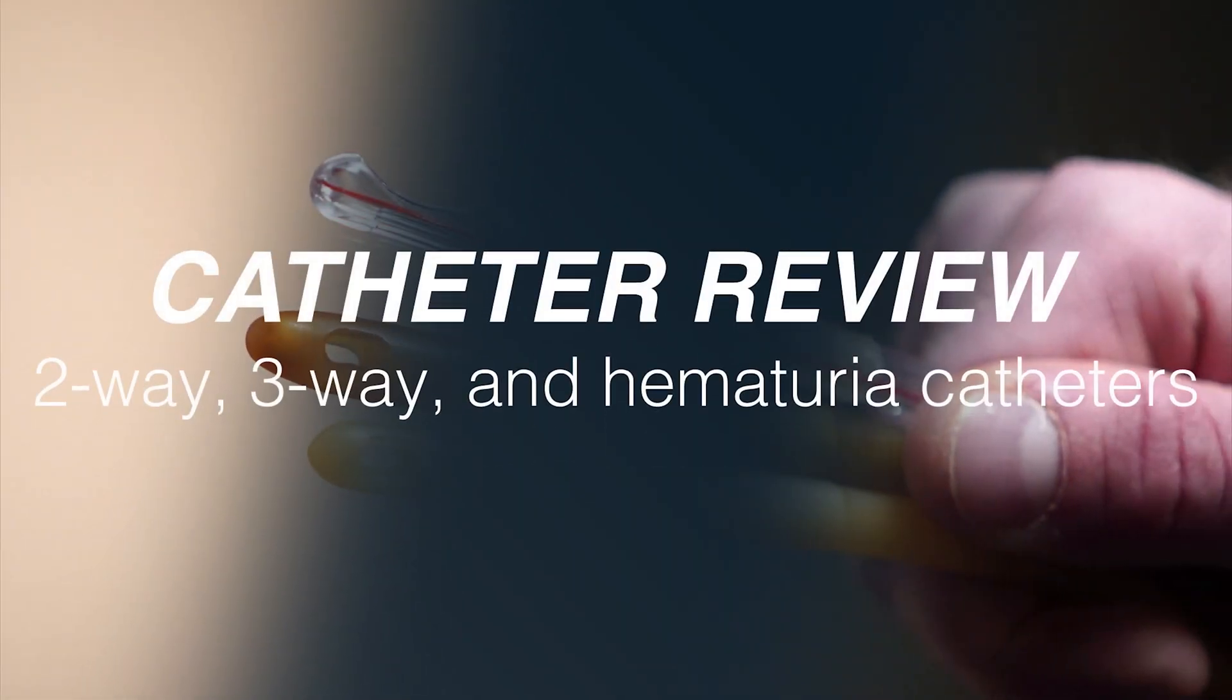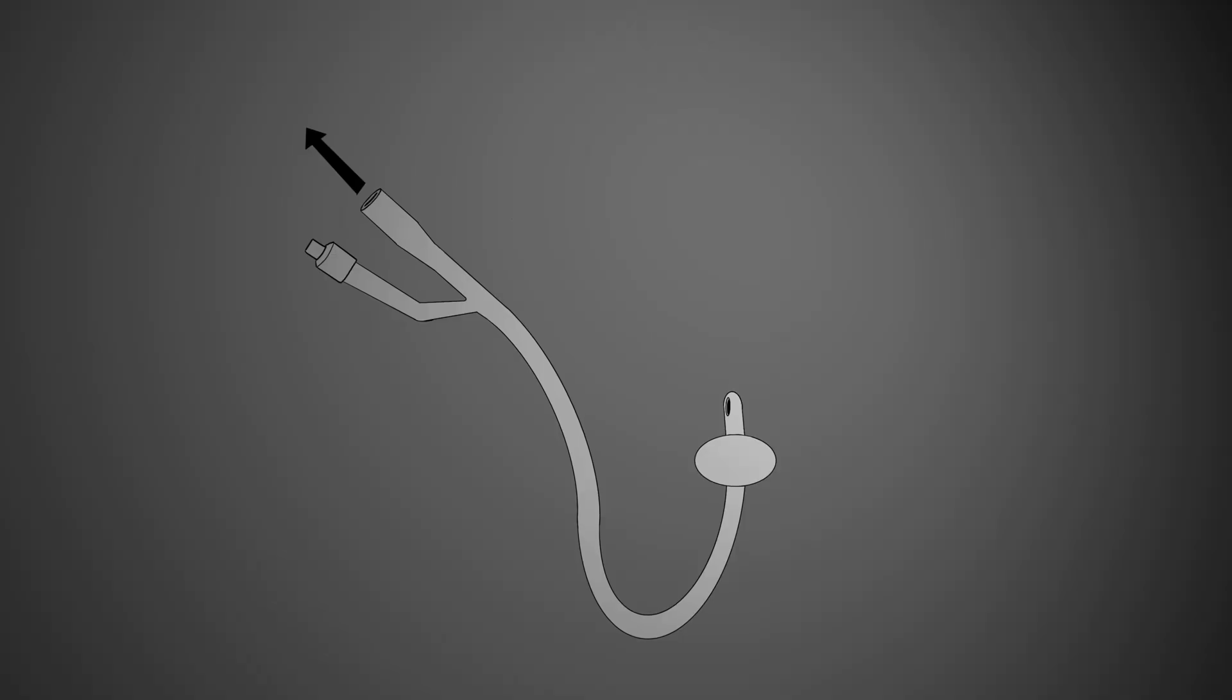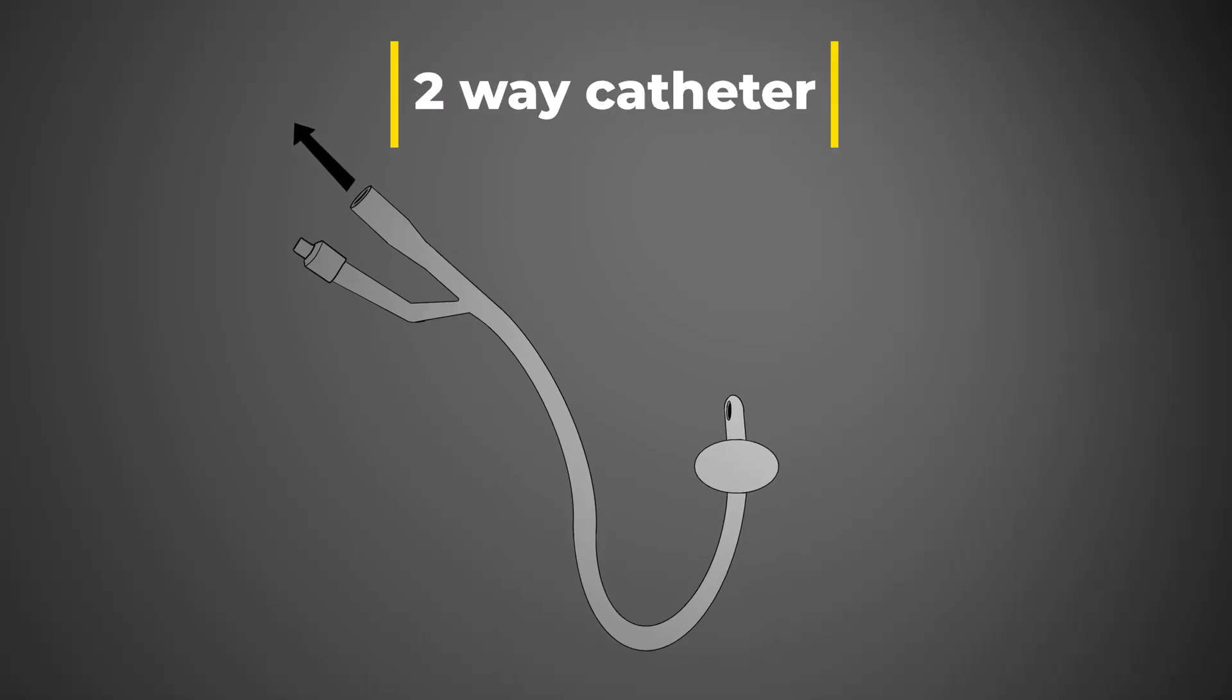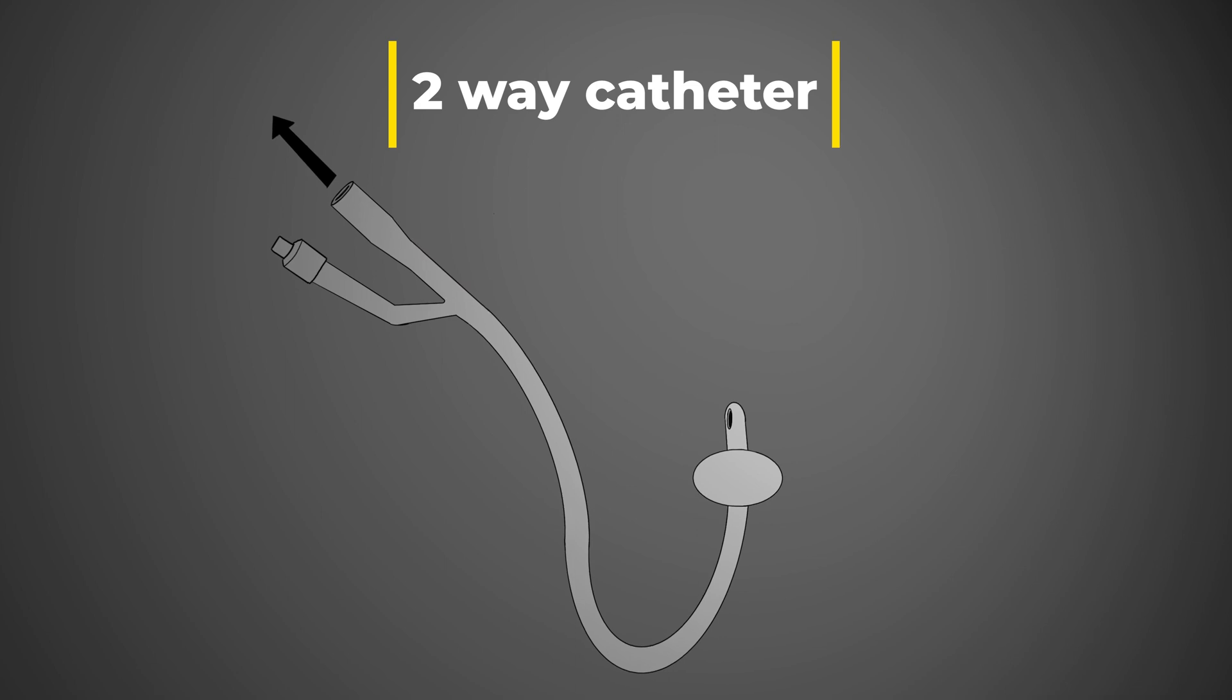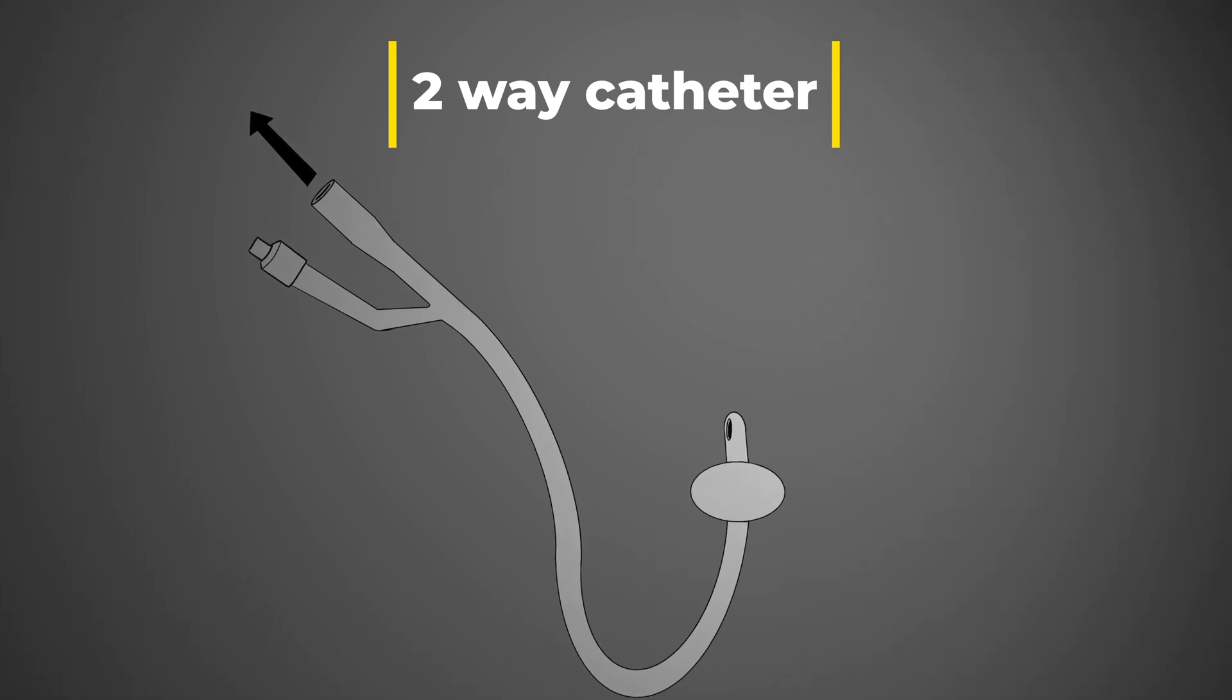So, catheter review. Let's go over what is a two-way Foley catheter and a three-way Foley catheter, and what is a hematuria catheter. A typical Foley catheter is a two-way device. There's a long tube with a balloon at the end of it to prevent the catheter from being removed from the bladder.